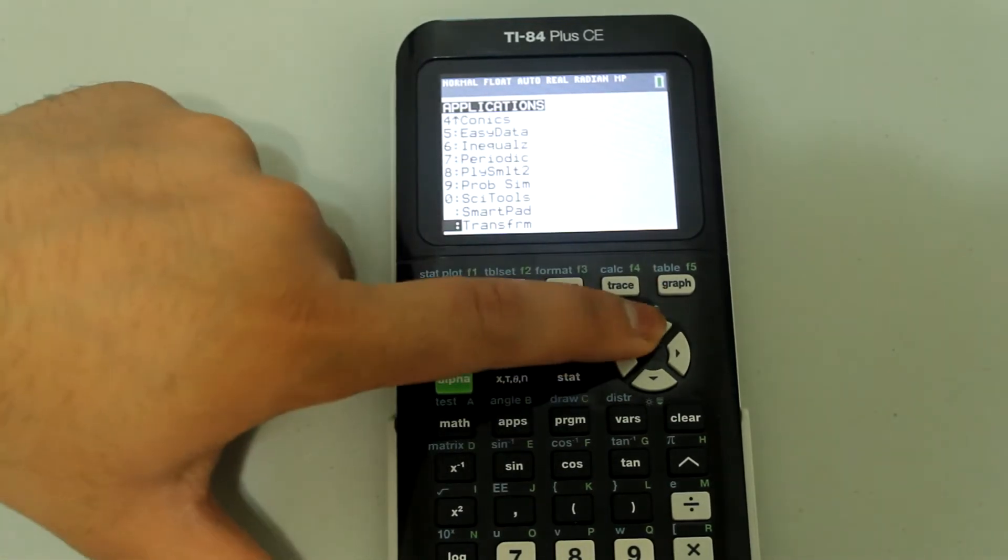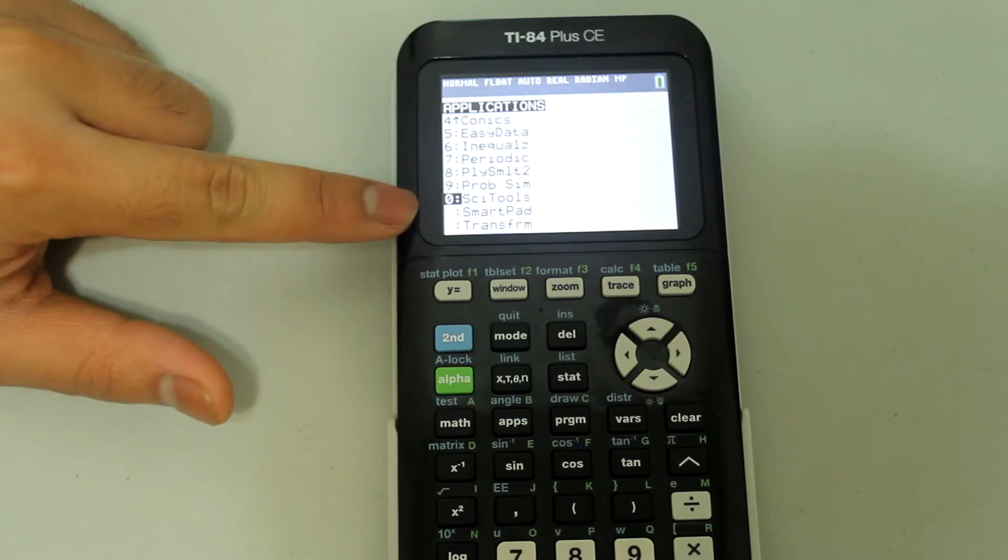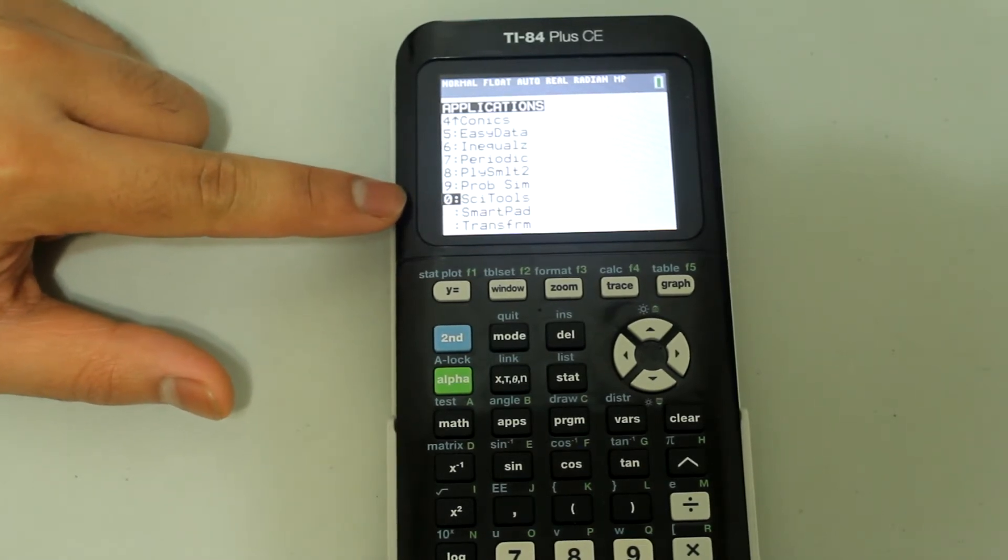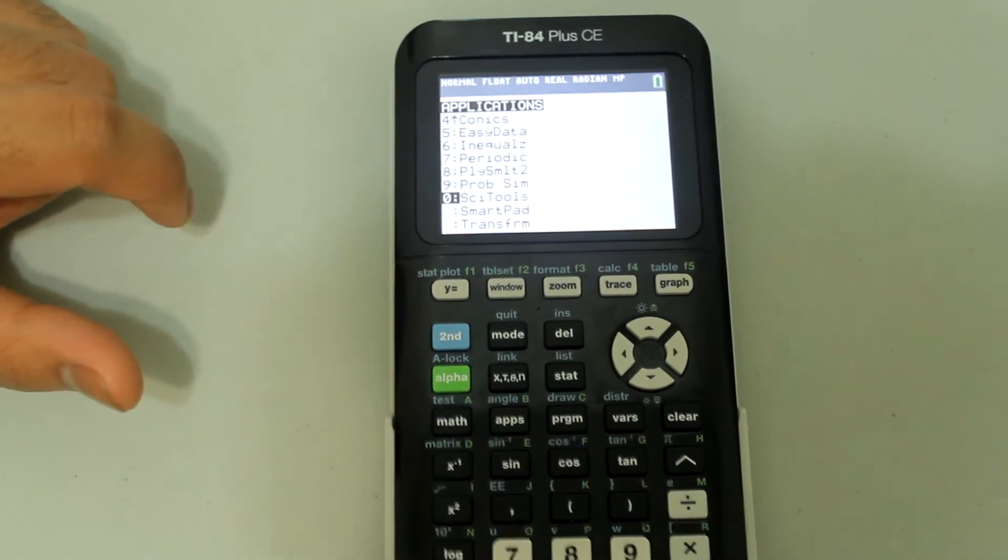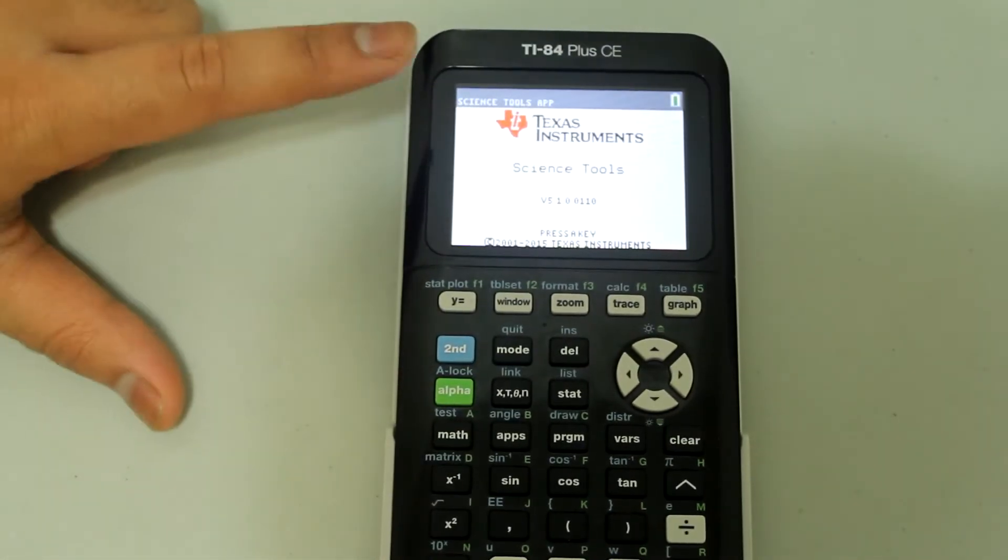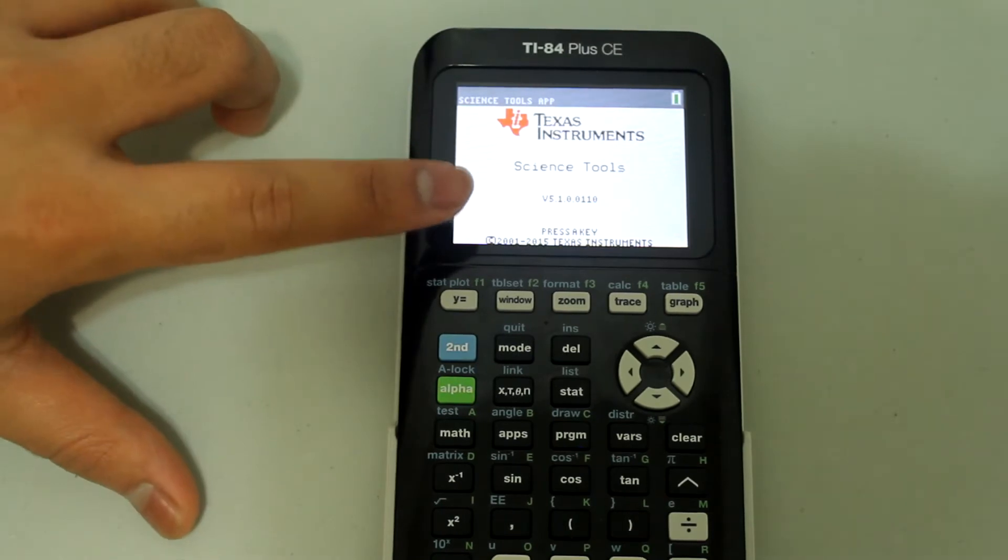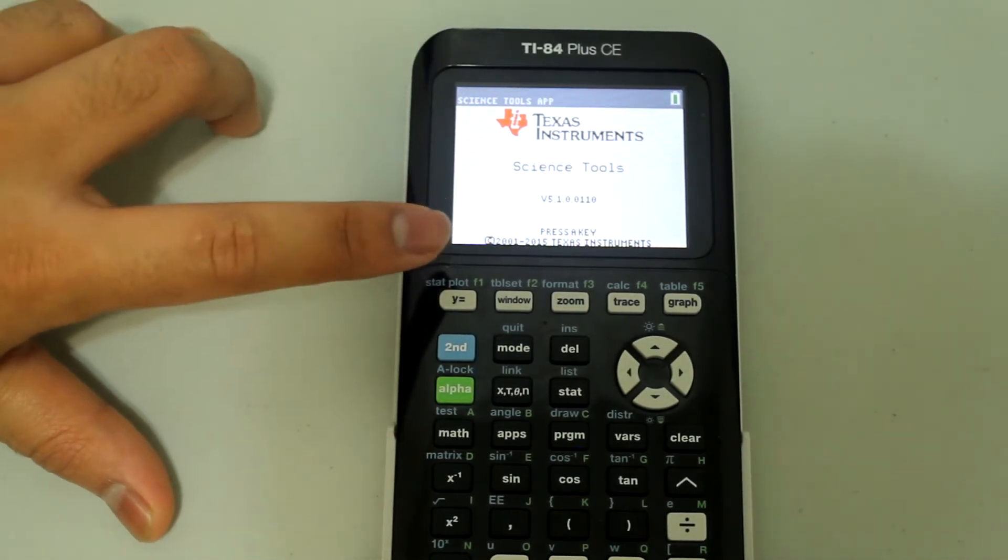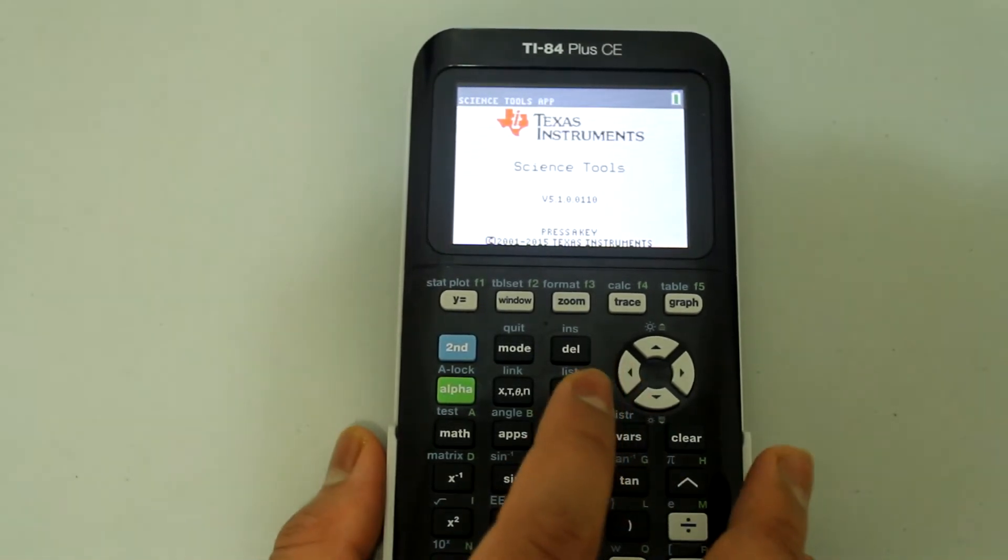Scroll up to the feature that says side tools and once the cursor is next to it, hit enter and you'll be taken to a screen that looks like this and you're instructed to press any key to continue. So just press any key to continue.